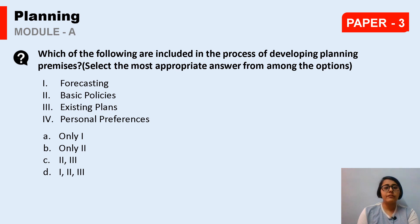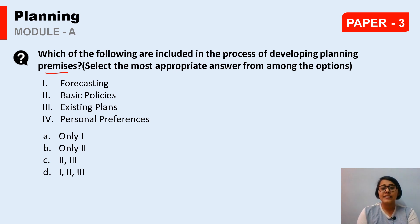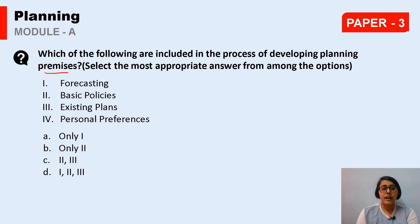The next question: Which of the following are included in the process of developing planning premises? The statements are: 1) Forecasting, 2) Basic policies, 3) Existing plans, 4) Personal preferences. We have already covered this — the answer is forecasting, basic policies, and existing plans — that is 1, 2, and 3, which is Option D. Personal preferences are not part of developing planning premises.